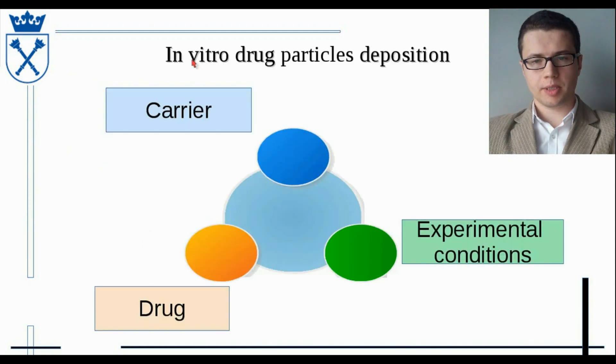In vitro drug particles deposition is a complex process. It depends on carrier properties like particle size, particle shape, and surface properties. It depends on experimental conditions like impactor type, inhaler type, and flow rate during the experiment. And it depends on the drug, like physicochemical properties of chemical compounds and drug particles distribution.